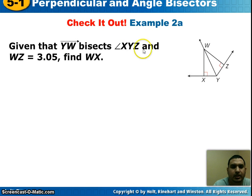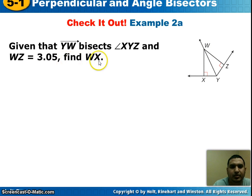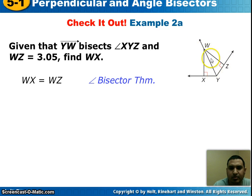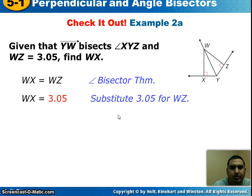Next example: given that ray YW bisects angle XYZ and WZ is 3.05, find the distance from W to X. Looking at this, the bisector theorem says that WX would have to equal WZ if we know that ray YW is an angle bisector. So if WZ is 3.05, then WX is 3.05.